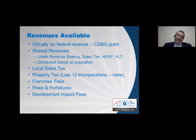The state shared sales tax is distributed in exactly the same way as urban revenue sharing — by population. Cities and towns receive 25% of the state sales tax, based on a base established in state law, and it is divided among municipalities according to each city's share of the total incorporated population in the state.